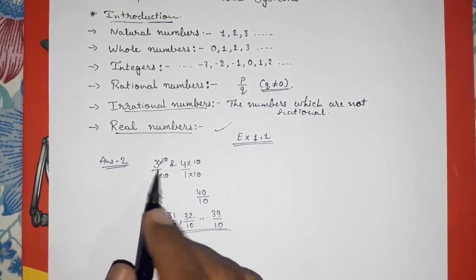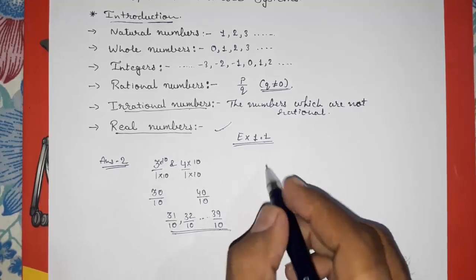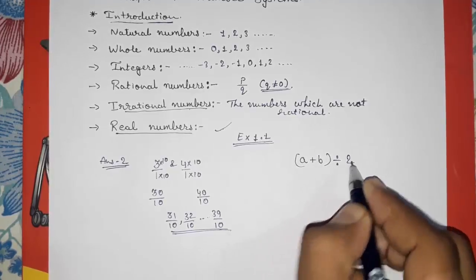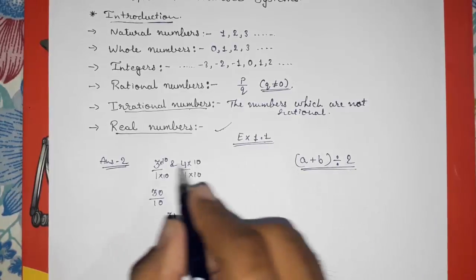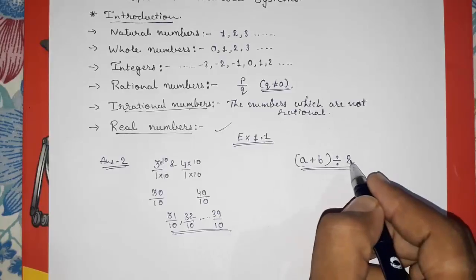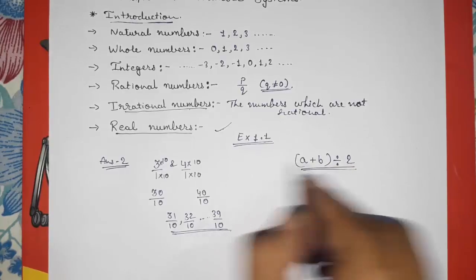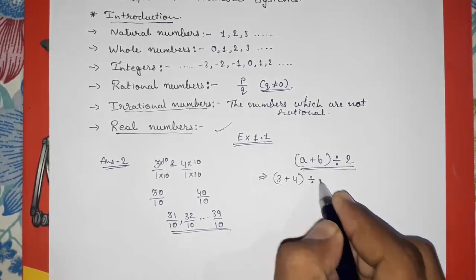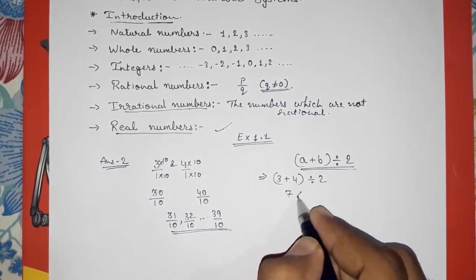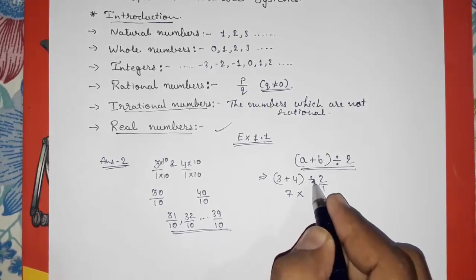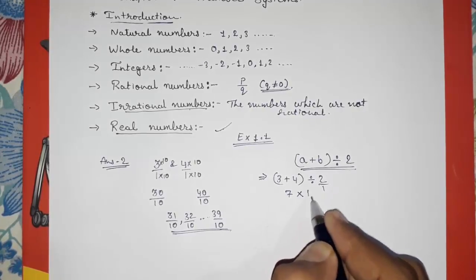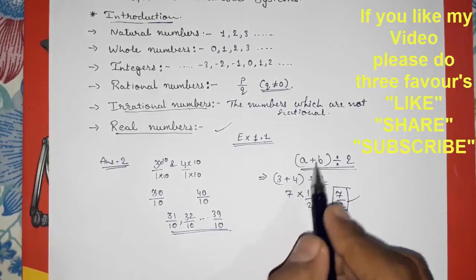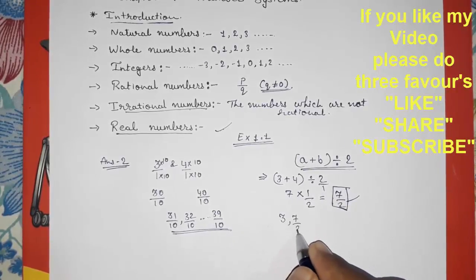The second method is the mean method: take a plus b divided by 2. Add the two numbers and divide by 2. For 3 and 4: 3 plus 4 equals 7, and 7 divided by 2 equals 7 by 2. So 7/2 is one rational number between 3 and 4. Now we have three numbers: 3, 7/2, and 4.